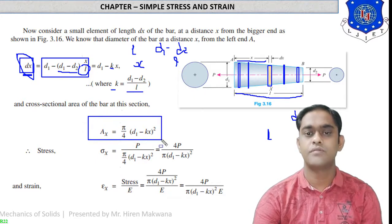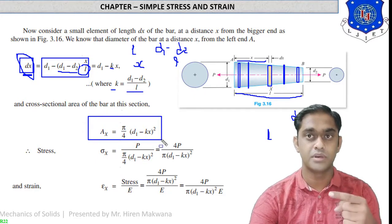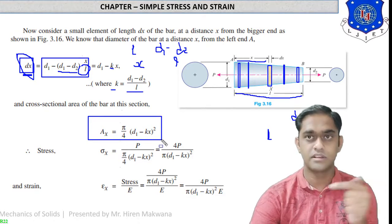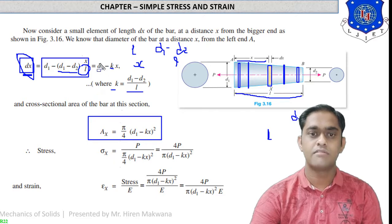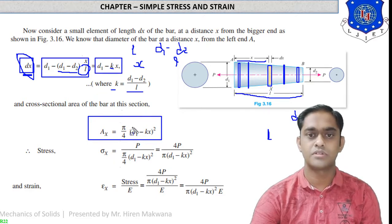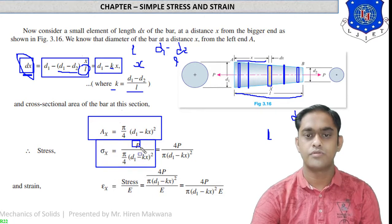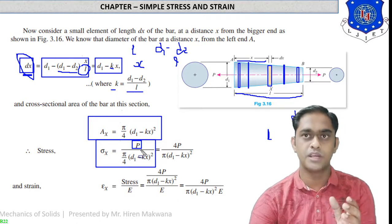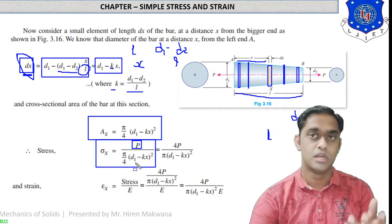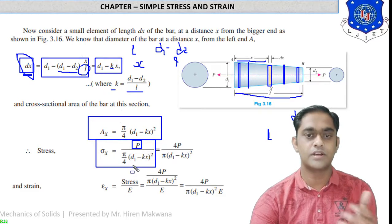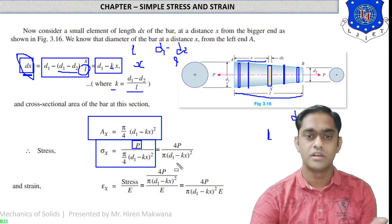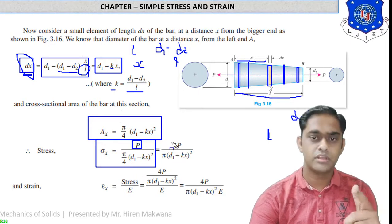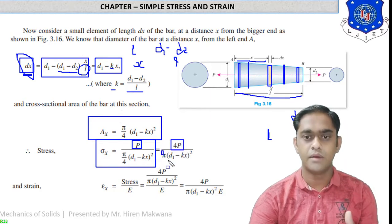First, find the cross-sectional area of the strip. The cross-sectional area of the circular strip is (π/4) times the diameter squared, which is (π/4)(D1 minus kx)². Stress equals force upon area, so stress equals P divided by (π/4)(D1 minus kx)². Rearranging, stress equals 4P upon π(D1 minus kx)².